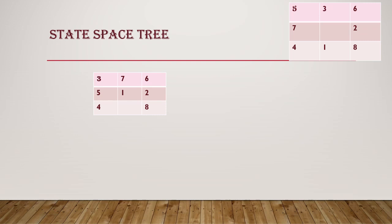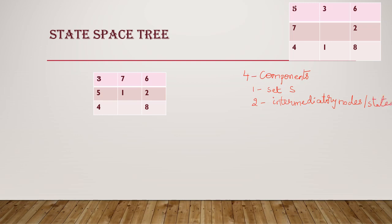While constructing the state space tree, we always keep the goal state in mind. We always start with the start state. While proceeding, there are four components: a set S of start states, intermediary nodes where each node is treated as a state of the problem, a set of arcs with operators specified on them (based on heuristic or without heuristic), and a set G containing the goal states. In this problem we are not using any heuristic.